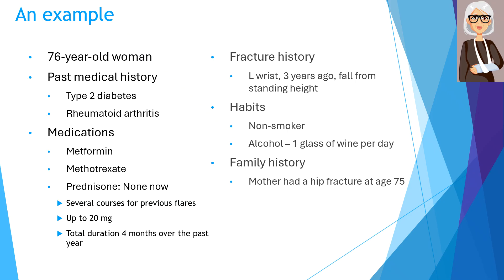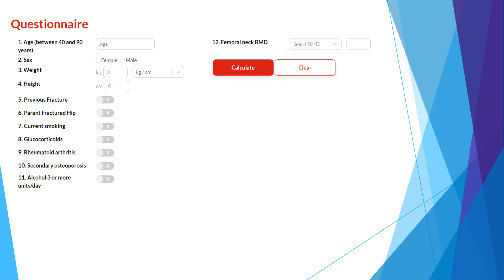With regards to her fracture history, she sustained a left wrist fracture 3 years ago from a fall from standing height. She is a non-smoker and consumes one glass of wine per day. There is a family history of a hip fracture in her mother at the age of 75. Let us go through the different risk factors in the FRAX tool.